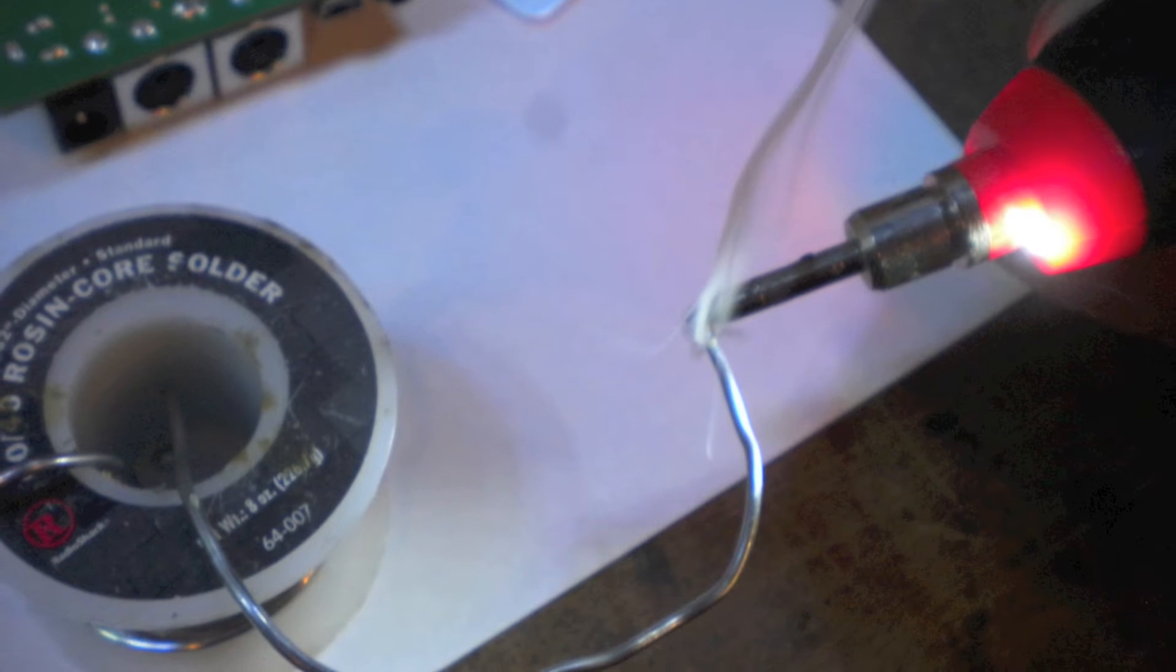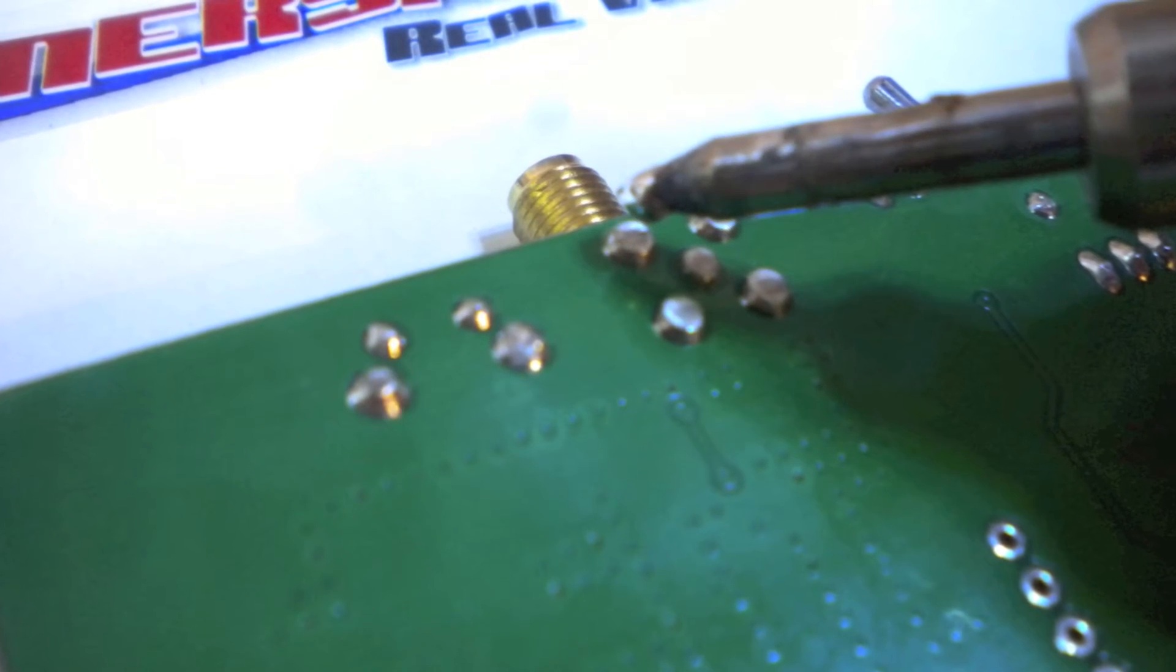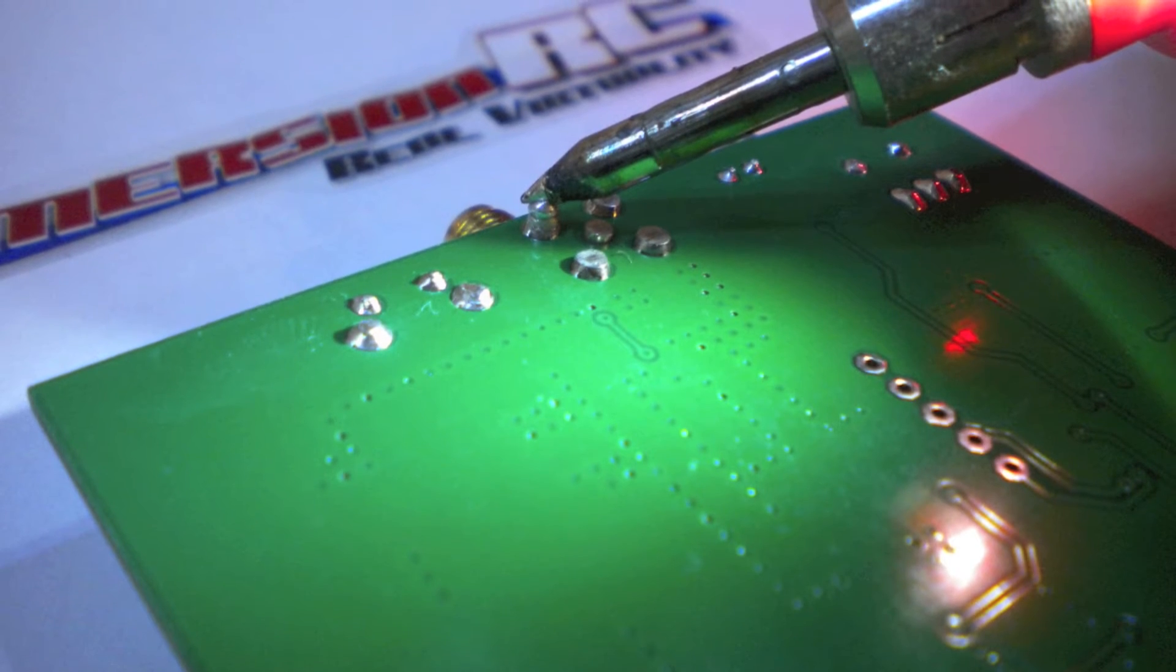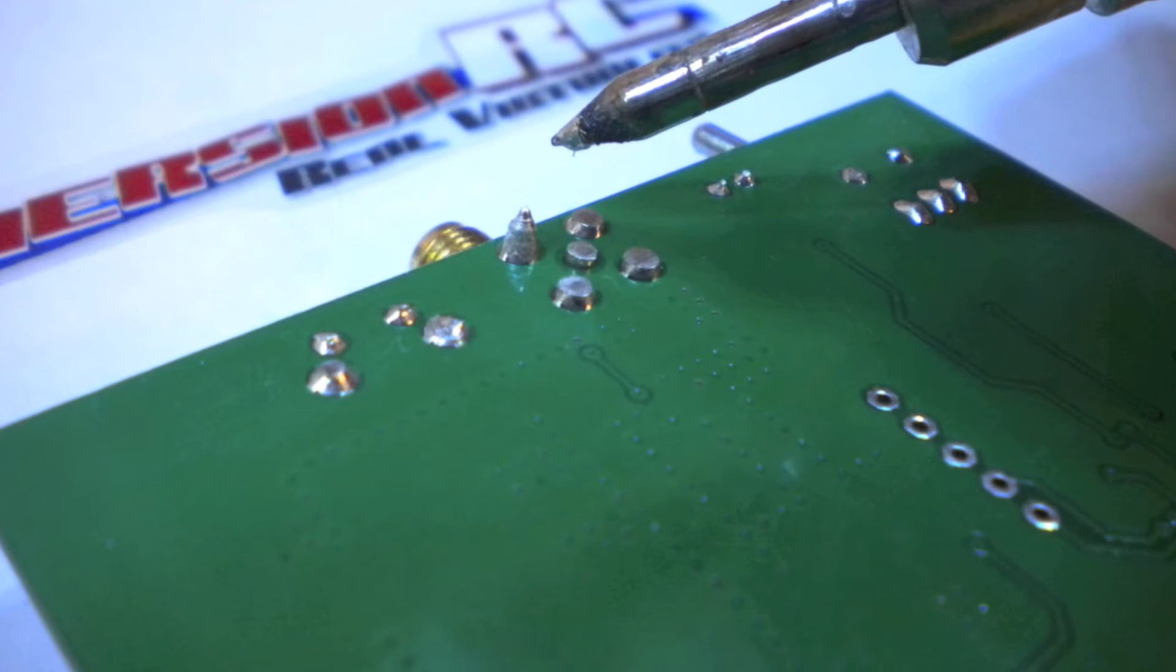Start by picking up a small amount of solder on the tip of the hot iron and then re-melting each faulty joint, making sure to leave some fresh solder behind. Repeat for all of the suspect solder joints.